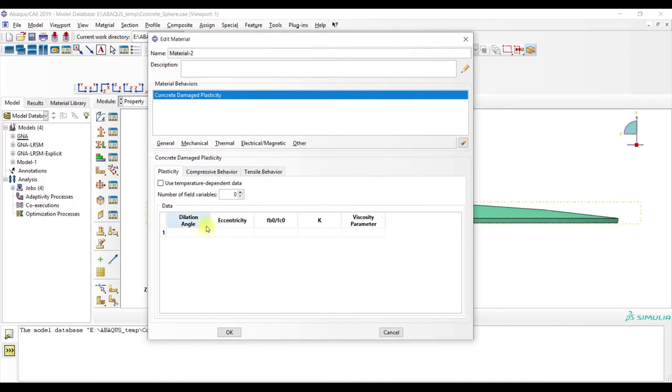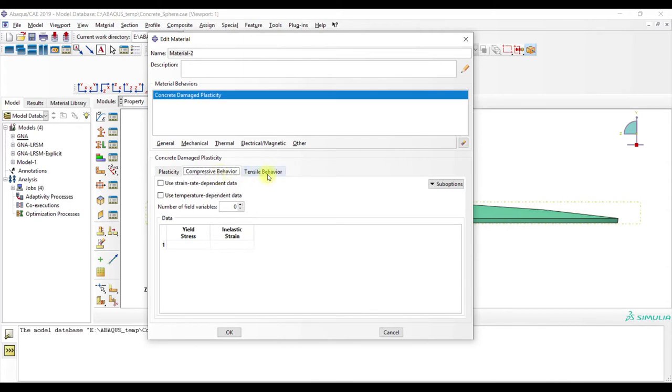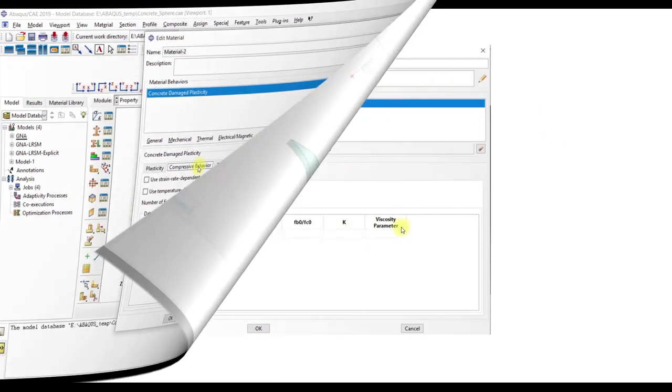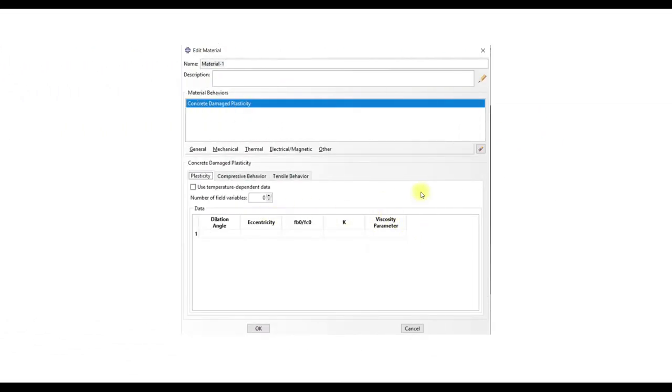And then we have here different variables: the dilation angle, the eccentricity, then two ratios and the viscosity parameter, and then here the compressive and the tensile behavior. Okay, now let's start and look at each individual value.